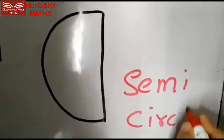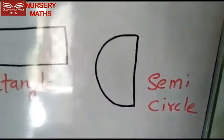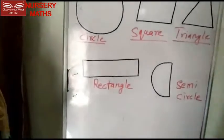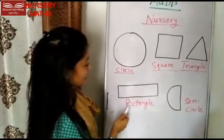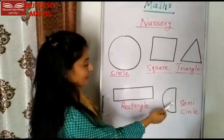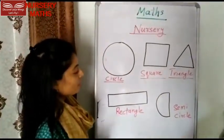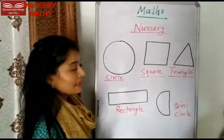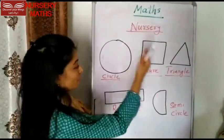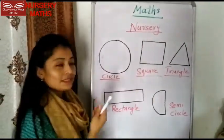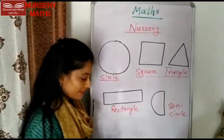Today we have learned two new shapes: rectangle and semicircle. Now we will make something interesting with the use of all these shapes. Okay, let's make something!